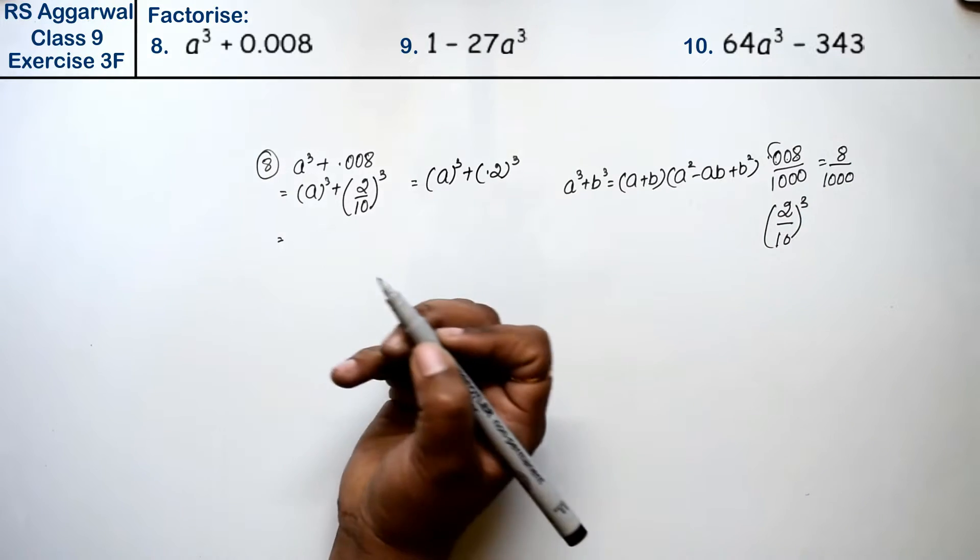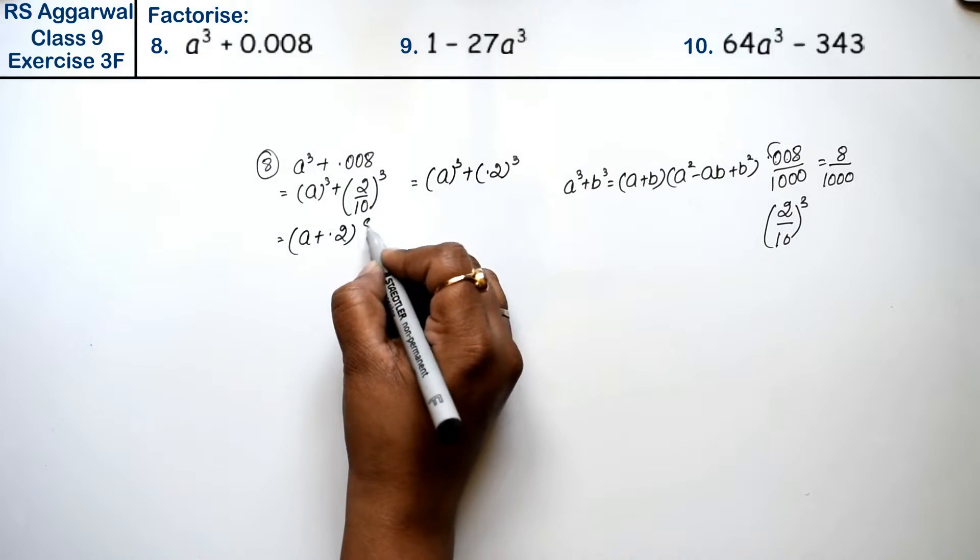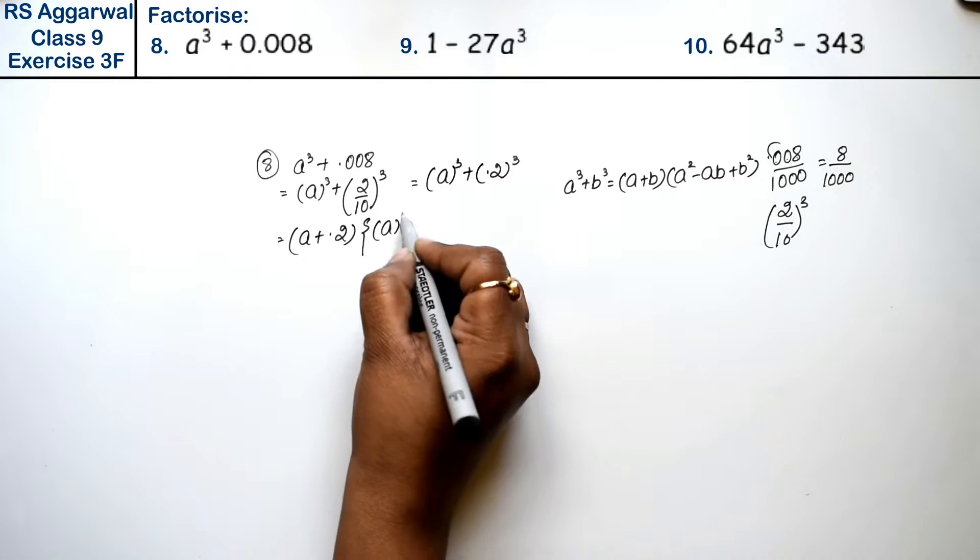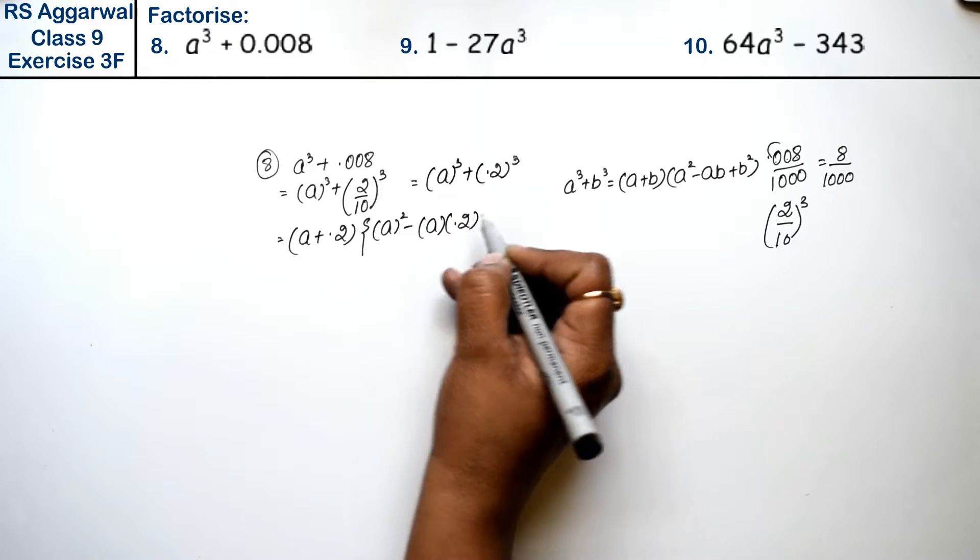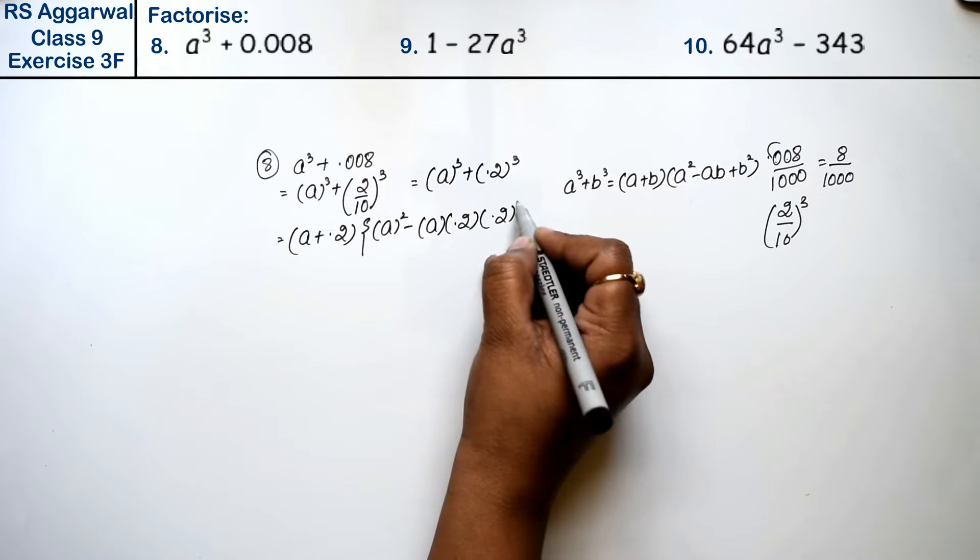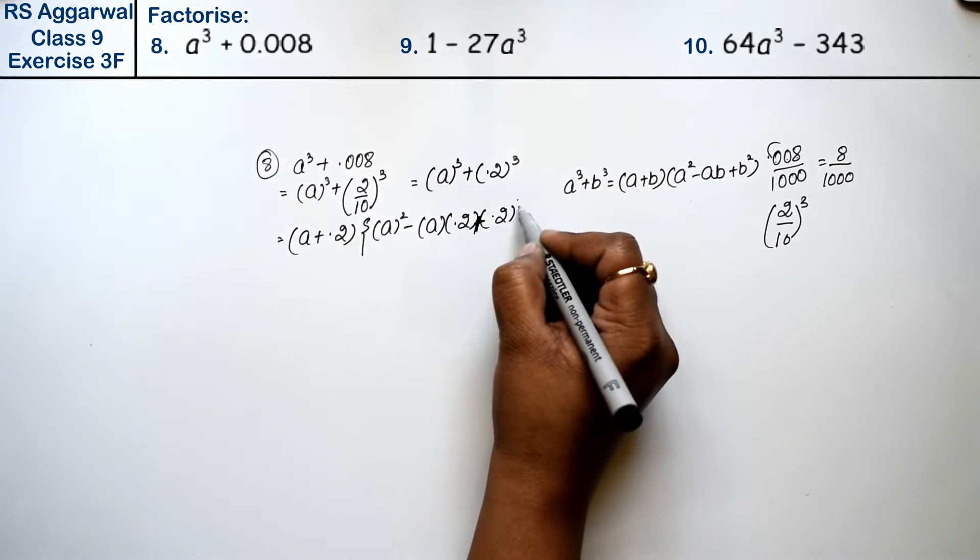So this is (a plus 0.2)(a² minus a times 0.2 times b² - sorry, a² minus ab plus b²).